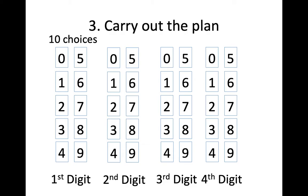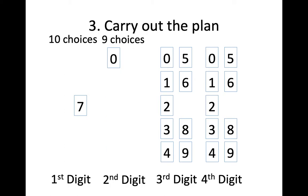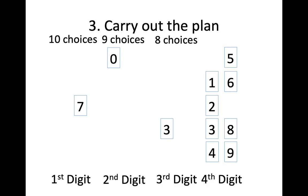Once I pick one of those — say I pick 7 — that removes it as a possibility for all my other digits, because I already used it. I don't want to repeat digits. That means there are 9 choices for the second digit. Similarly, if I pick one of those, say 0, that removes it from my third and fourth spots, so in my third spot I've only got 8 choices left. Picking one of those, say 3, removes 3 from my last spot — that means I've got 7 choices for the last spot.